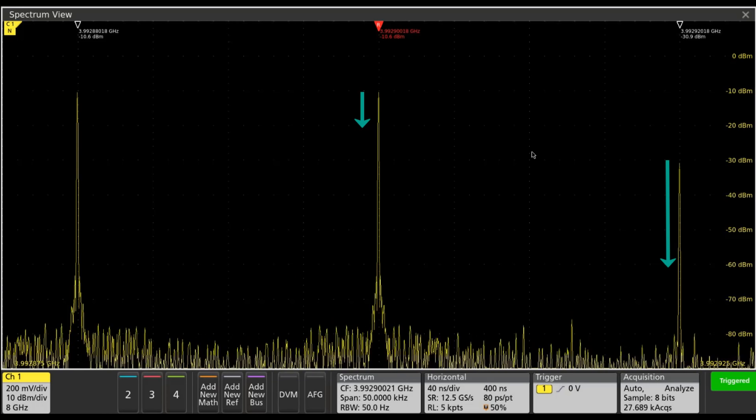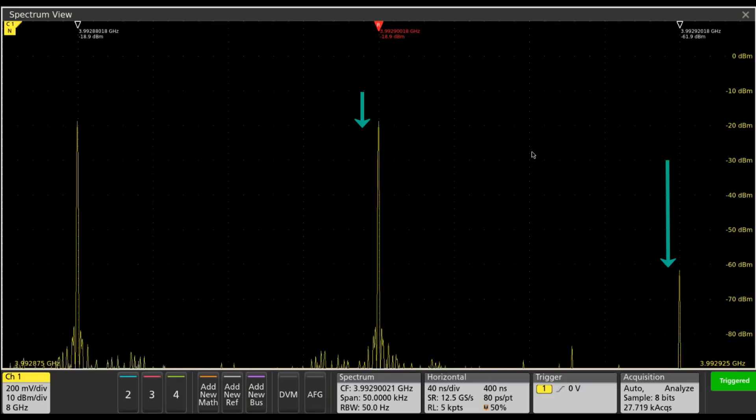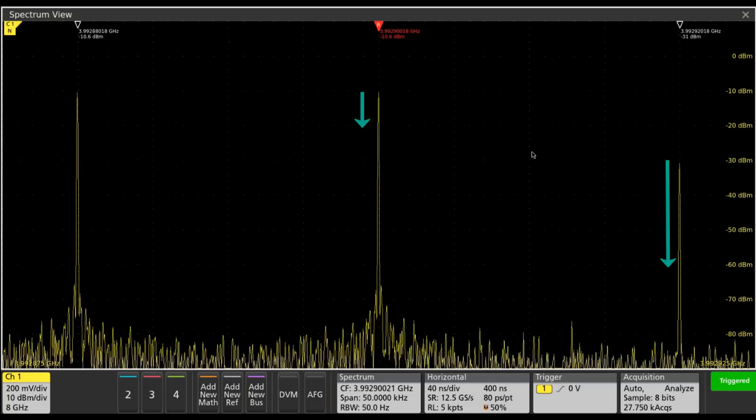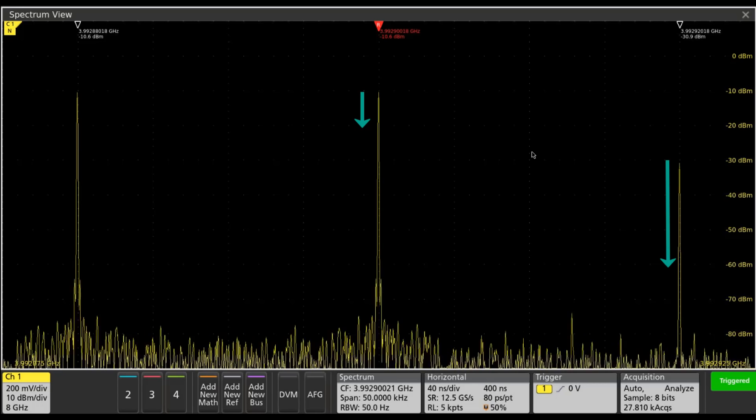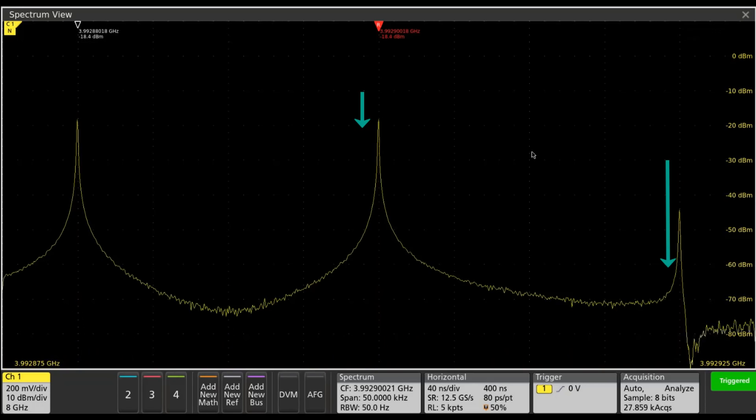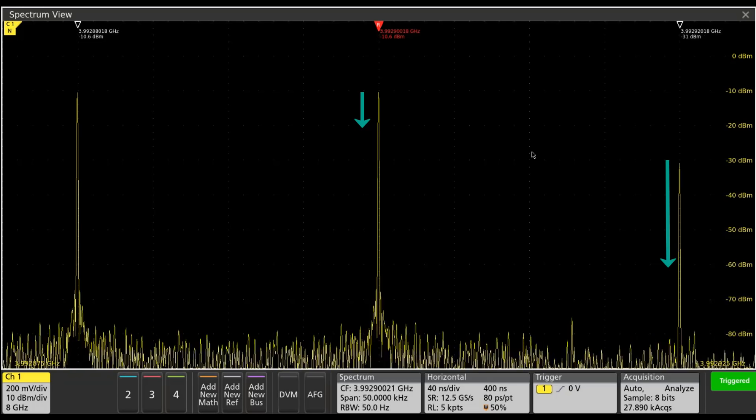If I just repeat that a couple of times, it's very easy to see we're dropping about one division in the spectrum analyzer on the main tones, but we're dropping about three divisions on the intermodulation distortion product.